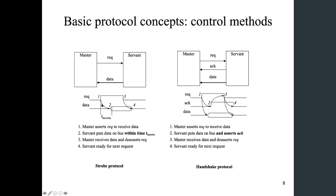We use a timing diagram to describe such a protocol. The master will raise the request signal from zero to one, indicating a request for the servant to transfer data. After some time — indicated as t-access — we expect the servant to put valid data on the data bus. That's step number two.